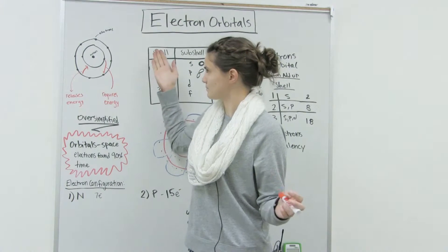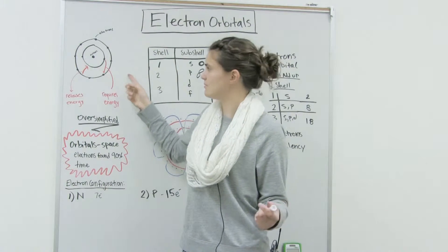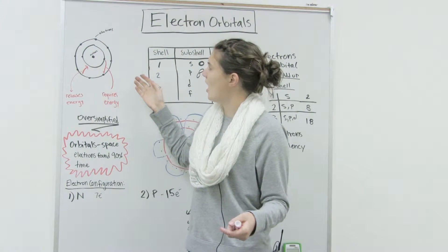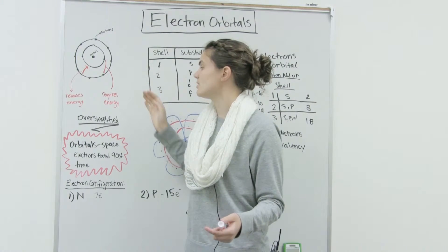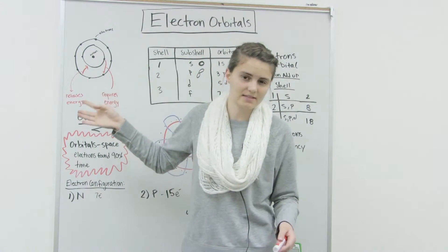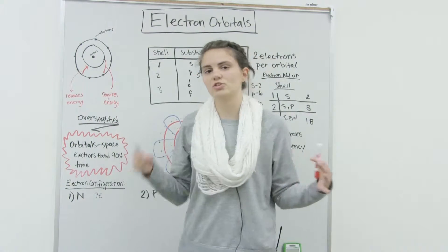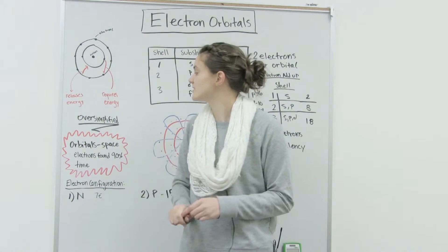Electrons are negative, and they surround the nucleus in a cloud or in an orbit. So this is the model that we typically show initially. This is called Bohr's model, but this model is actually oversimplified. It's actually a lot more complex than this, because it's 3D, and electrons don't just orbit in perfect circles all the time.